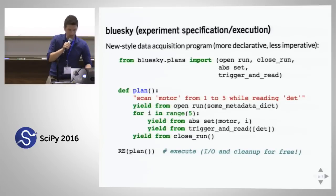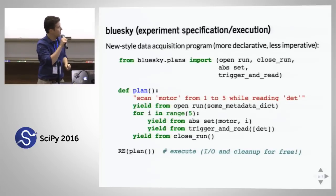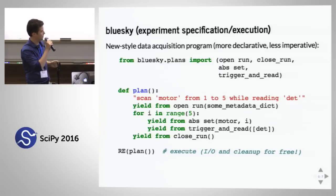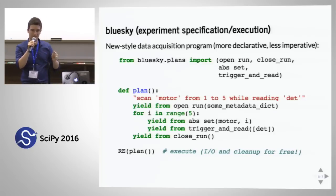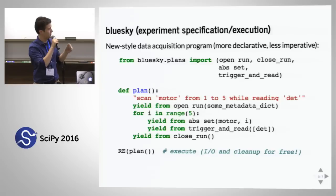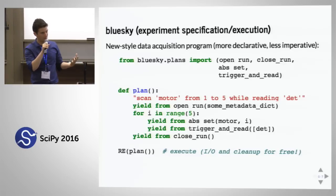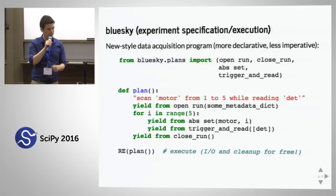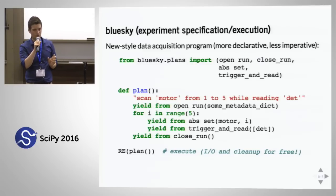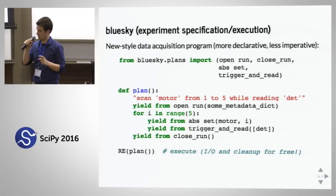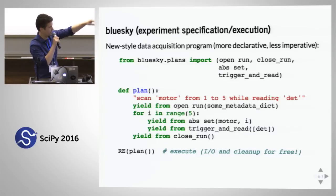Our new-style acquisition program is quite different from the old one. There's no I/O, no hardware safety cleanup, no interruption recovery written into the plan. This is just a Python generator that yields messages — instructions that tell our run engine what to do. The run engine then reaches out and actually performs the execution. We're moving people away from freeform imperative scripts to a more declarative style where you yield instructions that we interpret, giving us more control. We do all the I/O for free and maintain a list of everything touched so we can ensure it's stopped safely upon exit.